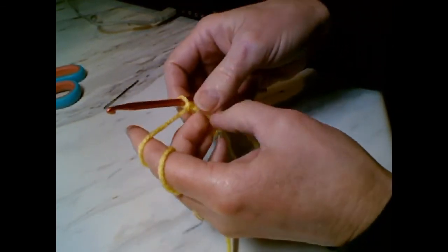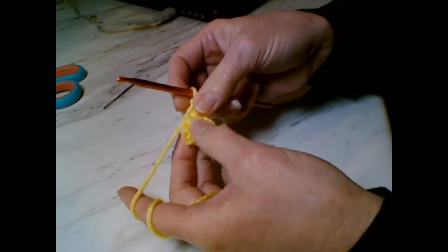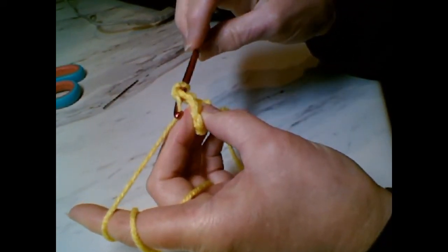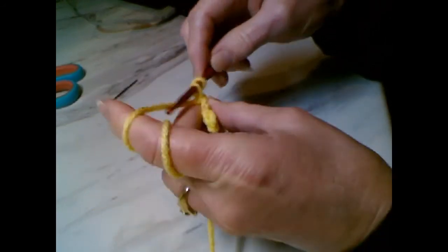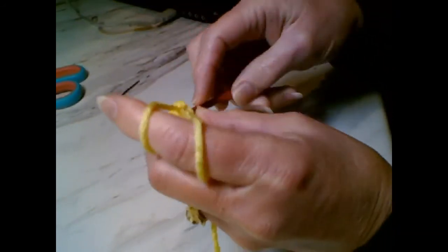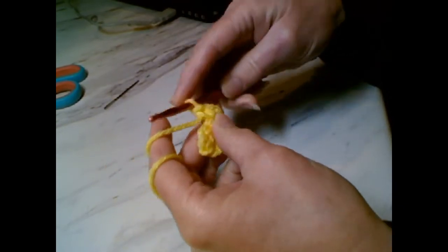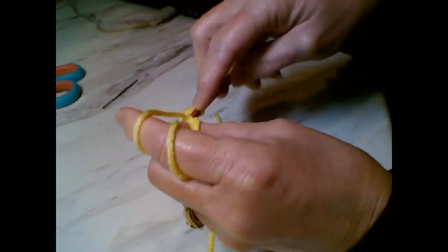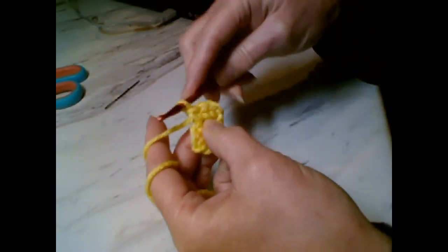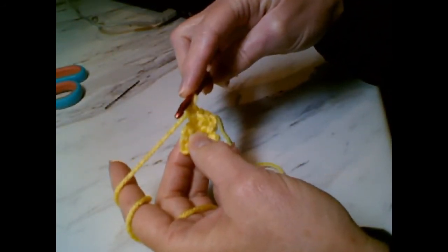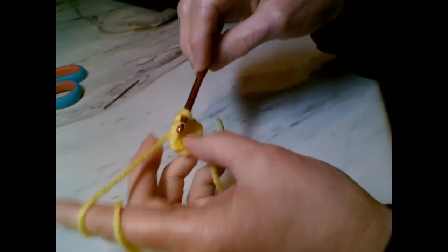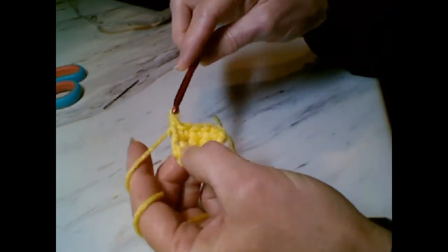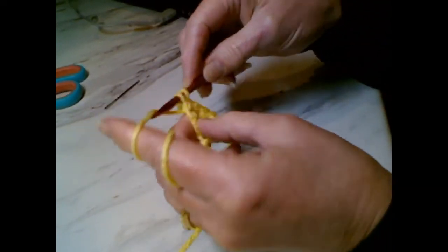Now chain one, turn your work, and in the first stitch—don't skip any stitches—do two single crochets. What we're doing, you can see, is that we are increasing on each row, but we don't want to increase too much, so the next two stitches are single crochets. Single crochet, single crochet, and two single crochets in the last stitch.